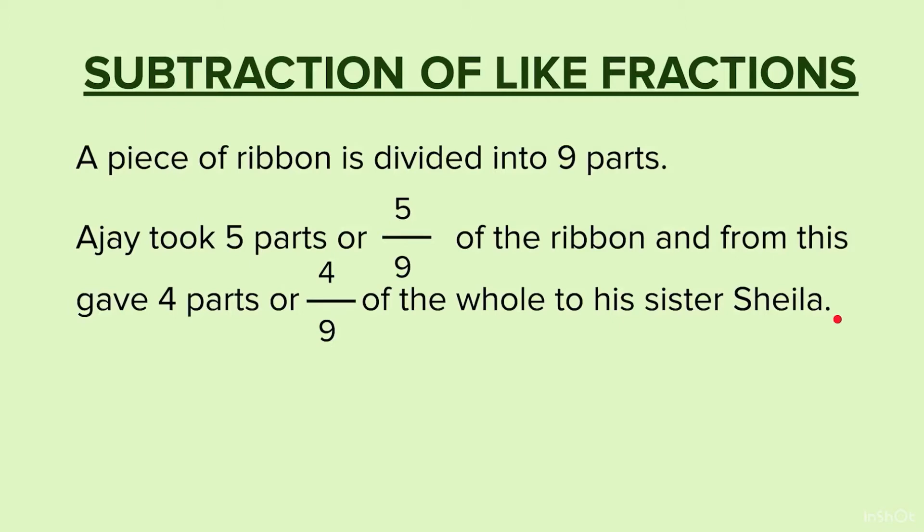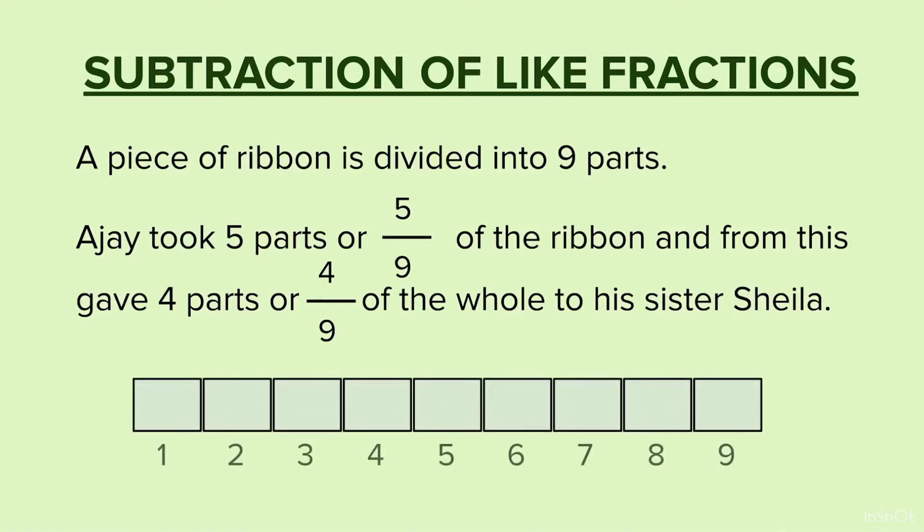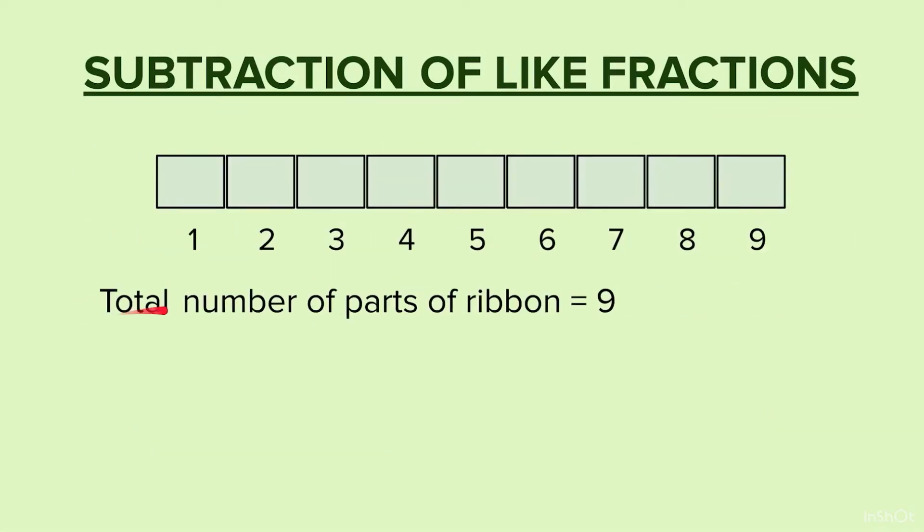Here we have told that a ribbon is divided into 9 parts. And Ajay took 5 parts. So this is a ribbon and this is 9 parts. Total number of parts of ribbon is equal to 9.